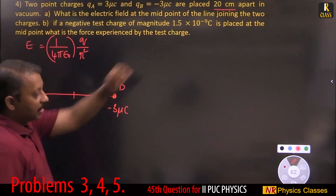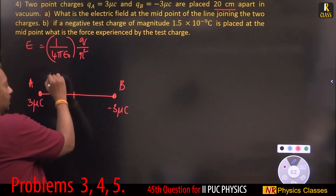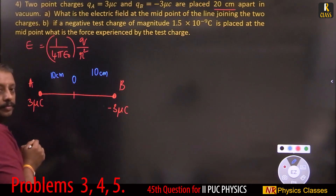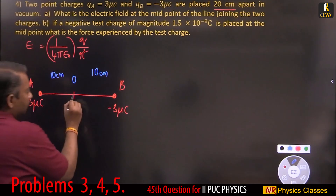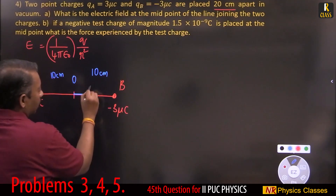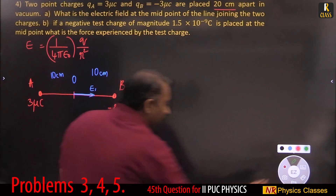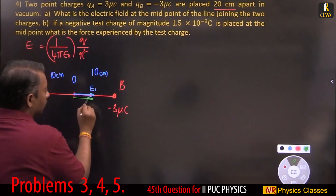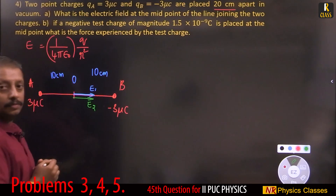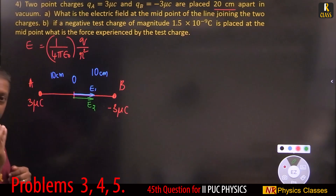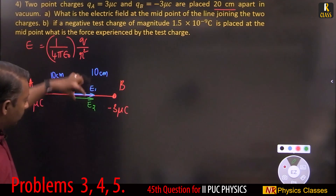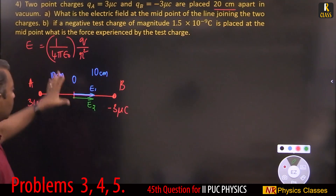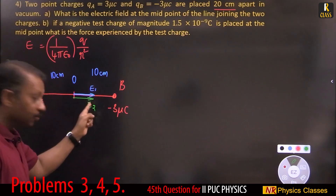The total distance is 20 centimeters, so half is 10 centimeters on each side. Let the midpoint be O. Because of the positive charge at A, electric field E1 points away from A. Because of the negative charge at B, electric field E2 points toward B. Both E1 and E2 are in the same direction along OB. Their magnitudes are equal.